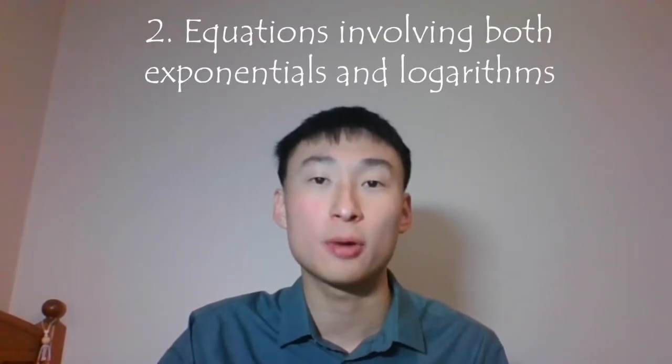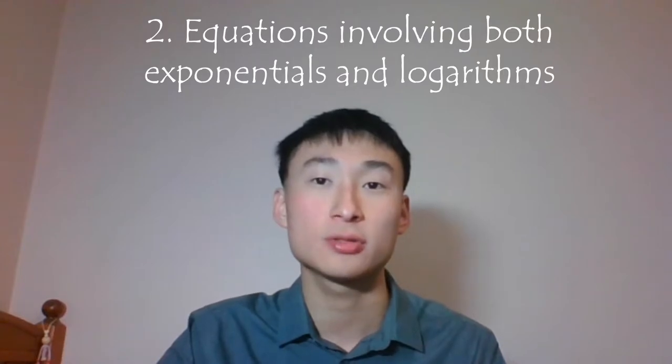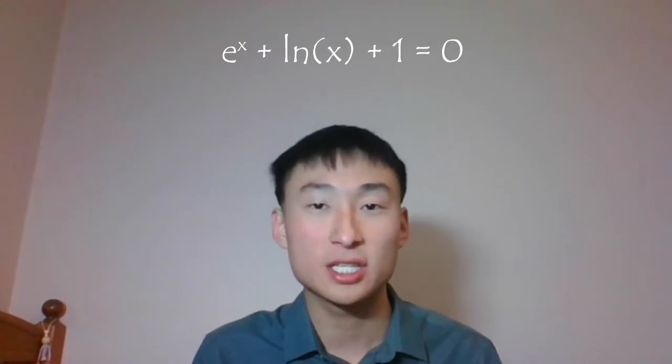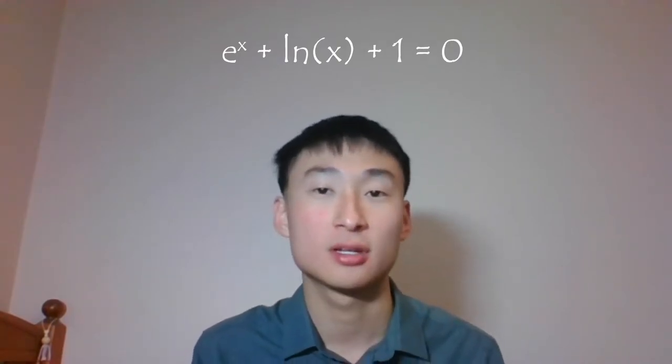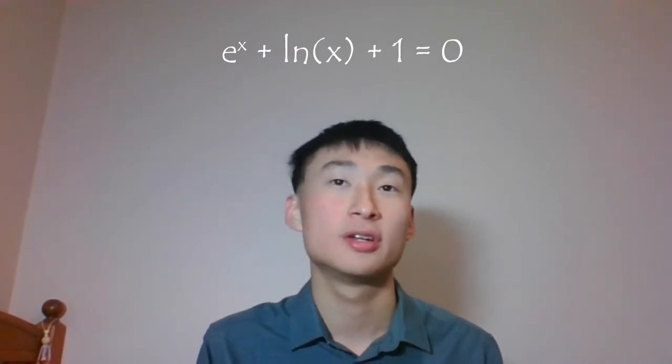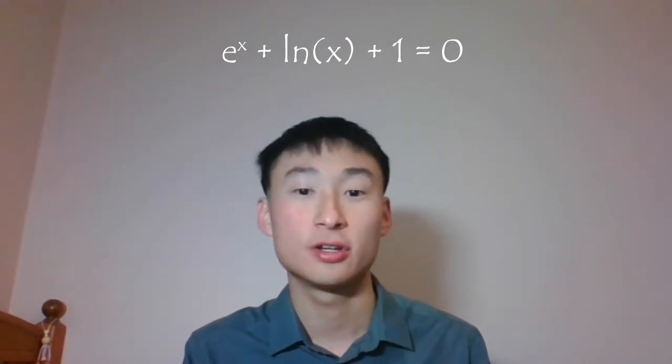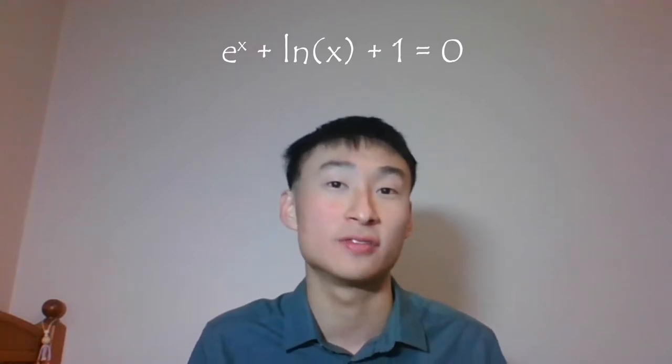The next thing is that you can't solve equations that involve both exponentials and logarithms by hand. For example, if you see e to the power of x plus ln of x plus 1 equals zero, you can't solve it by hand — you have to use a CAS if there is a solution. My great Year 11 Maths Methods teacher Mr. Peckham told me that.